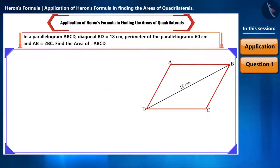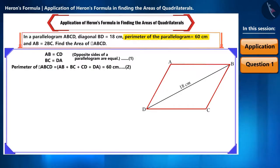ABCD is a parallelogram. That is, AB will be equal to CD and BC will be equal to DA. Let's call it equation 1. We are also given the perimeter of the parallelogram. That is, AB plus BC plus CD plus DA equals 60 cm. Let's call it equation 2.